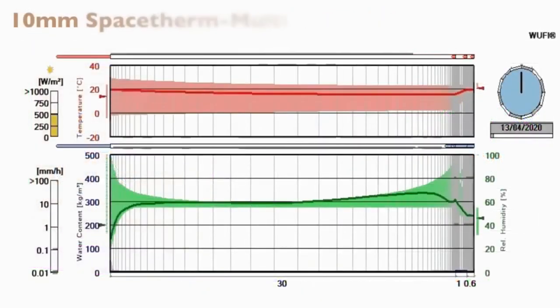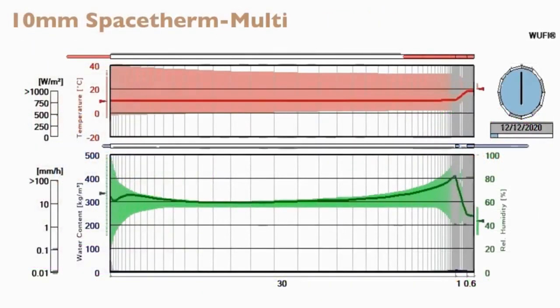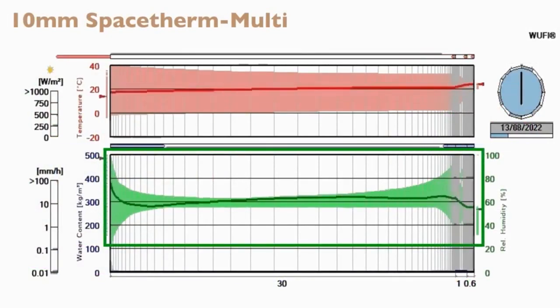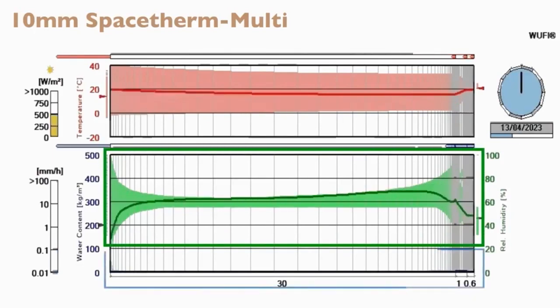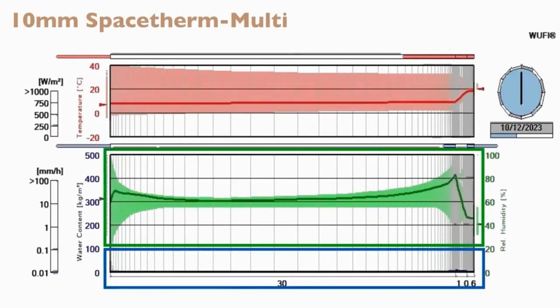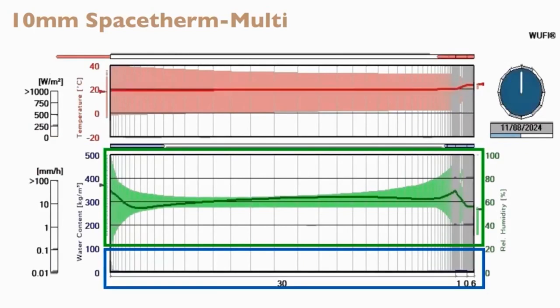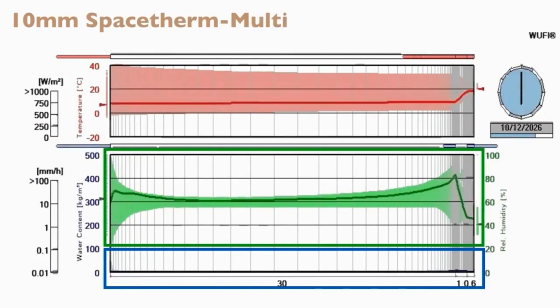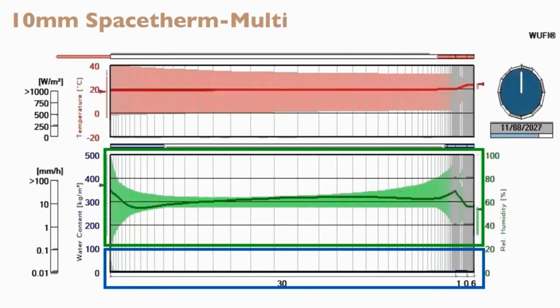Here we can see the results of the modelling on the first case, 10mm aerogel on a SpaceTherm multiboard. The green line on the lower graph shows the relative humidity through the wall, and the blue line shows the moisture accumulation. In this, although both are higher than would be the case for a more modern wall construction, such as a cavity wall or a timber frame, the moisture content is not increasing year on year.